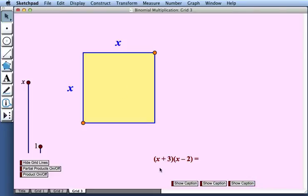For our first problem we're going to look at x plus 3 times x minus 2. So to create that I'm going to drag this point, the orange point, down to add 3 to x. So so far what is the area of this grid? Well it's x squared plus 3x.